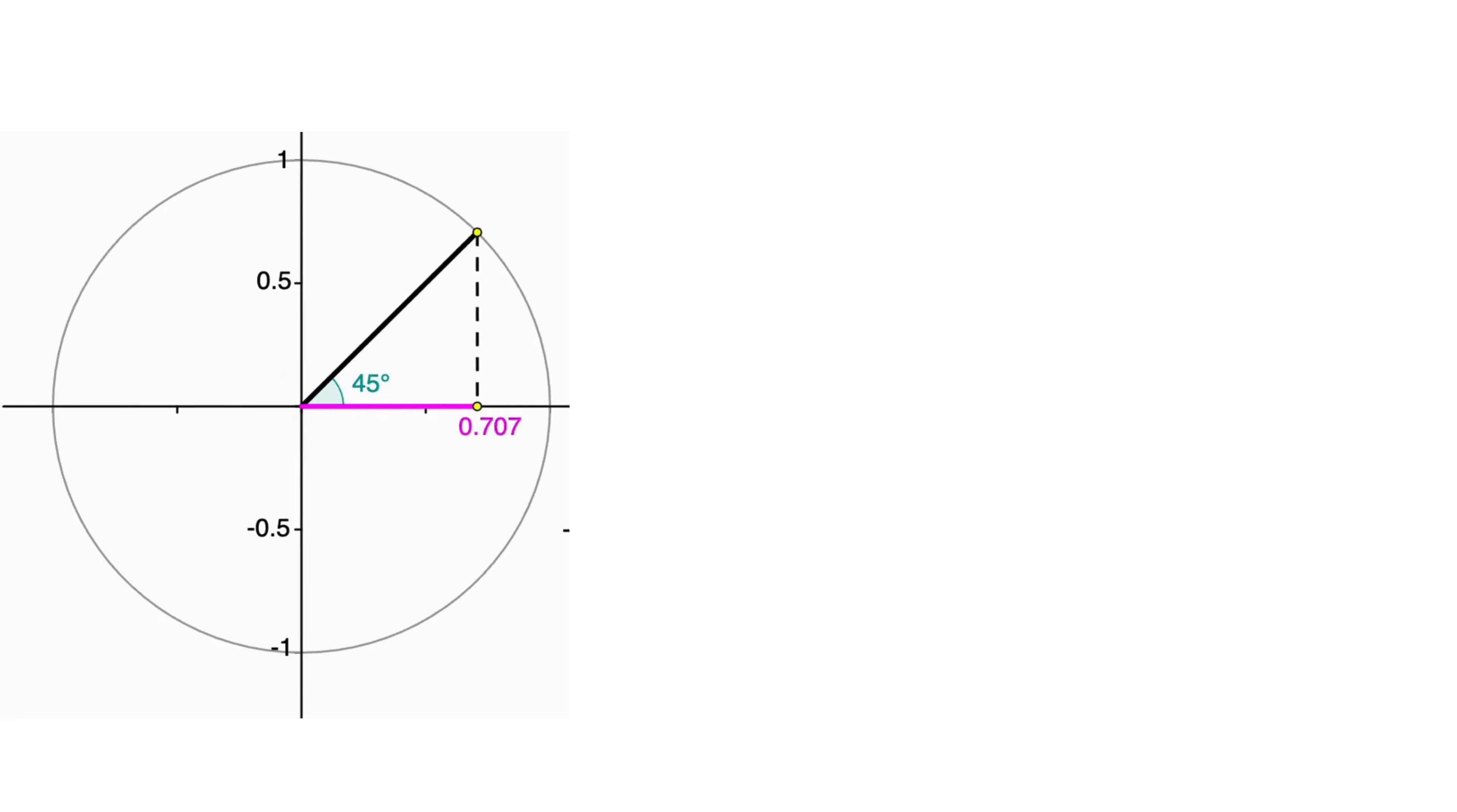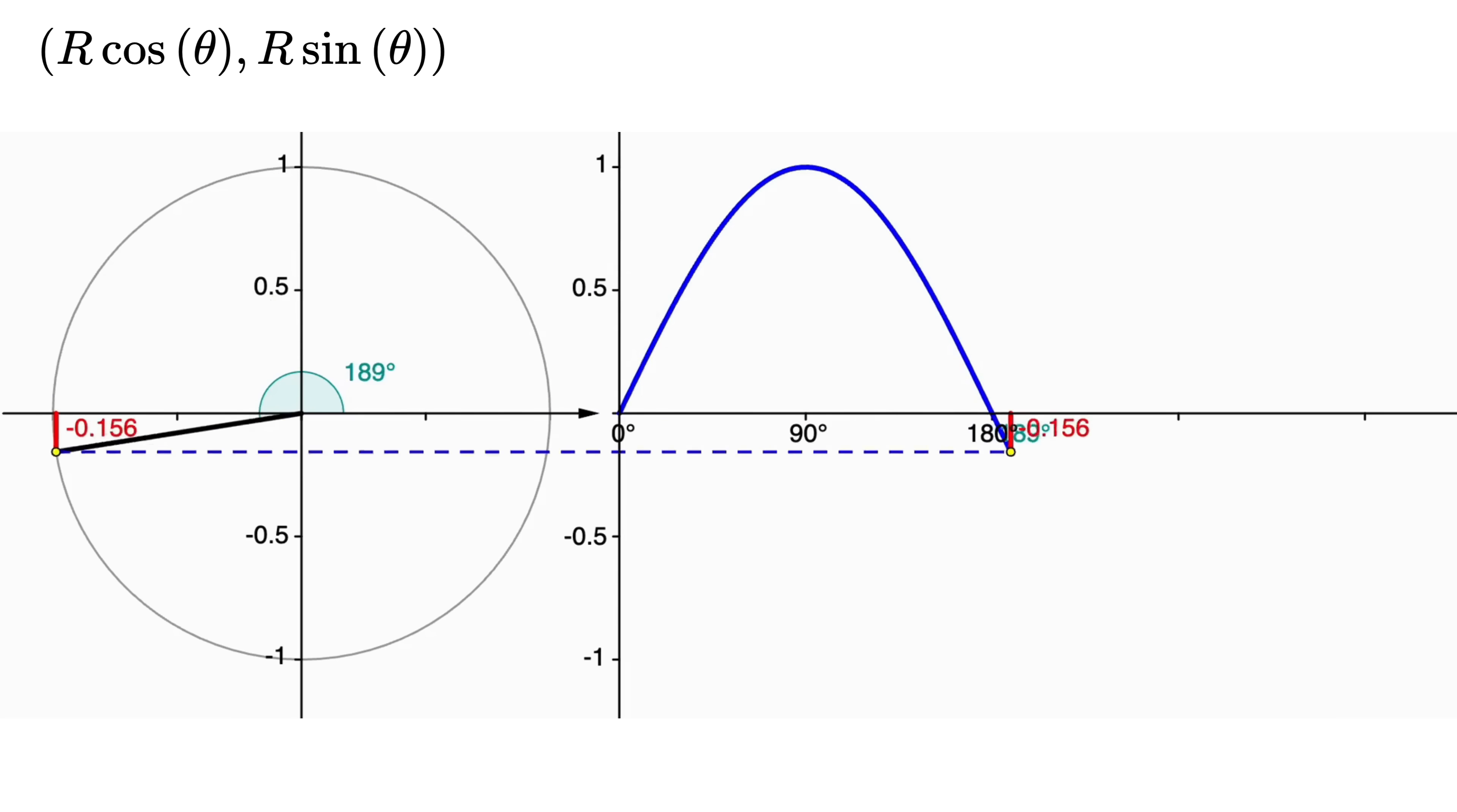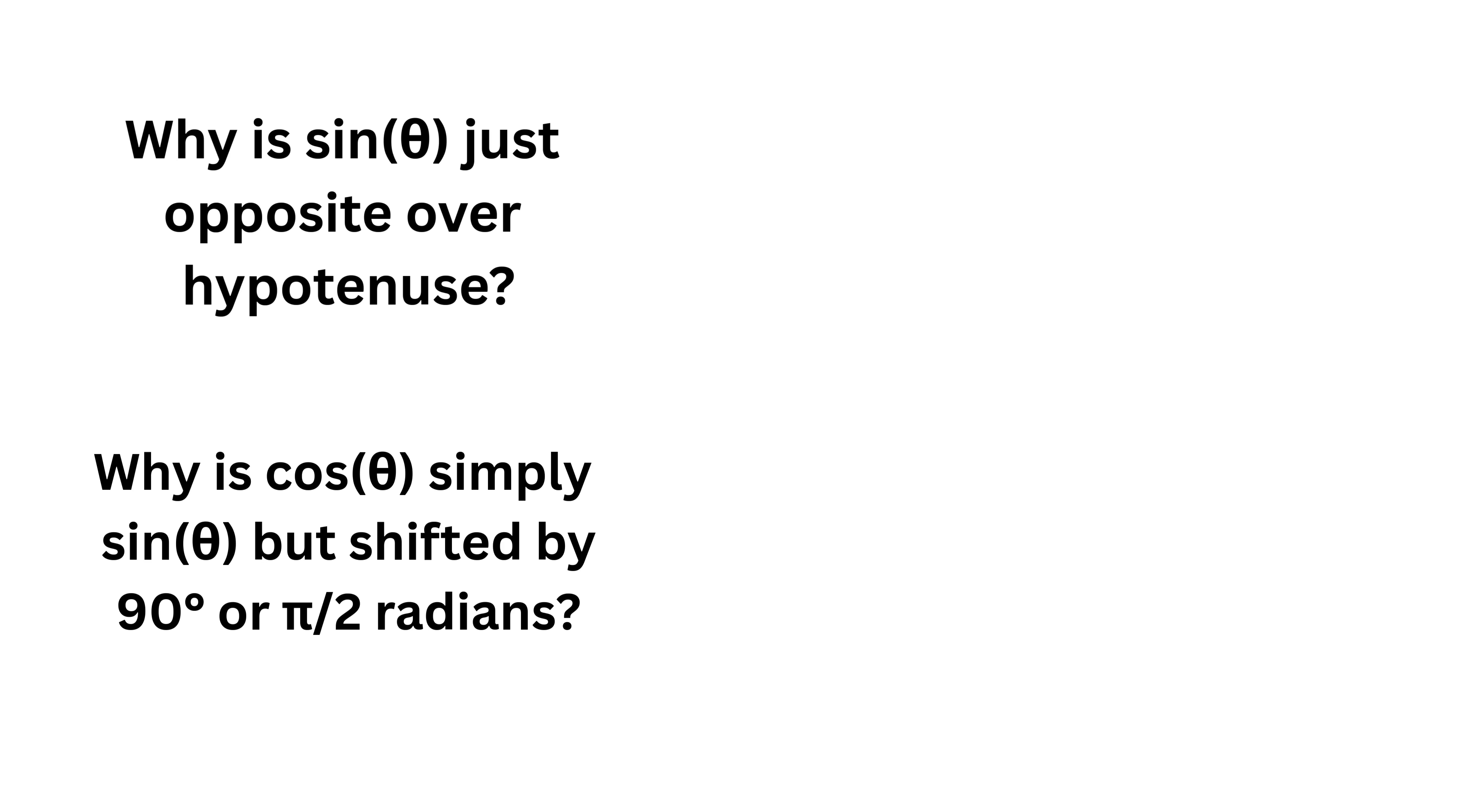Now watch closely what happens as the point moves. Its horizontal position from the center is given by r cos(θ), and its vertical position is given by r sin(θ). So even though the point is moving in a circle, its shadow on the x-axis goes back and forth, tracing out a cosine wave, and the shadow on the y-axis goes up and down, tracing out a sine wave.